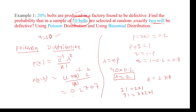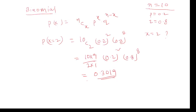Using Poisson we get 0.2707, and using binomial we get 0.3019. That is the difference between Poisson and binomial — both ways we can calculate, but there is a small difference between the results. Approximately we are calculating the probabilities using binomial distribution or Poisson distribution, and both are correct.